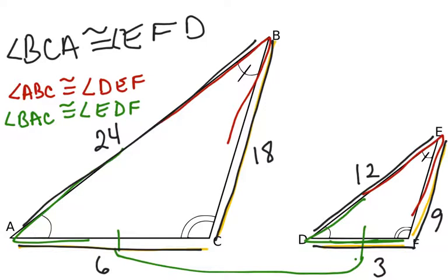So we have side FD, which is 3, and we have side CA, which is 6 units. It needs to be equivalent to EF, which is 9, and BC, which is 18,